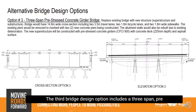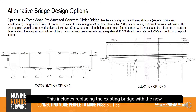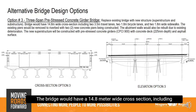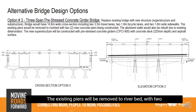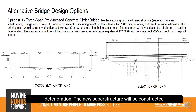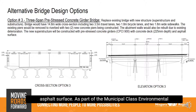Design Option 3 includes a three-span pre-stressed concrete girder bridge, replacing the existing bridge with a new structure — both superstructure and substructure. The bridge would have a 14.8-meter wide cross section, including two 3.5-meter wide travel lanes, two 1.8-meter wide bicycle lanes, and two 1.8-meter wide sidewalks. The existing piers would be removed to riverbed with two new concrete piers constructed, and the abutment walls would also be rebuilt due to existing deterioration. The new superstructure will be constructed with pre-stressed concrete girders with concrete deck and asphalt surface.